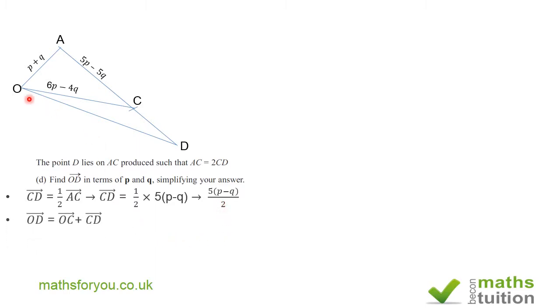Now moving on from there, OD, which is from O to D, we can find OD by going from O to C, which we know, and then from C to D. We know CD is 5(P minus Q) divided by 2. So now we have OD being 6P minus 4Q, because that's OC, and then we add CD, which is 5(P minus Q) divided by 2.